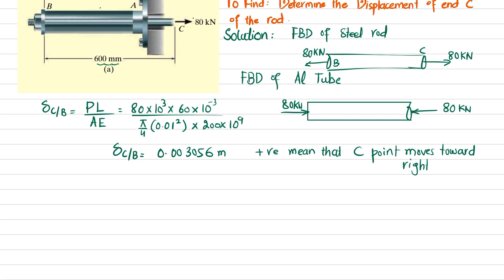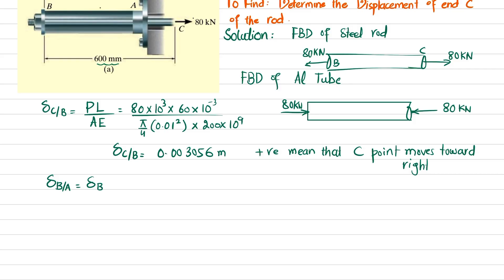This positive sign indicates that C moves toward the right relative to end B, since the bar elongates. Now we will find the displacement of point B relative to the fixed end A. Due to compression in the aluminum tube, we need to see how much point B moves toward fixed support A. Using the same formula PL divided by AE for the aluminum tube: